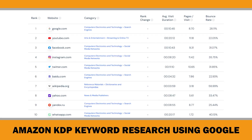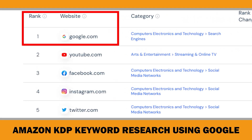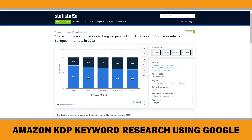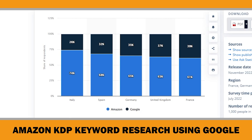It comes as no surprise that Google is the most visited website. However, when people want to buy stuff online, they don't always start with Google. According to Statista, in 2022, only 26% of Italian shoppers searched for products on Google. The other 74% went straight to Amazon.